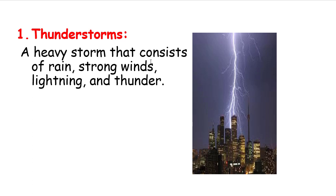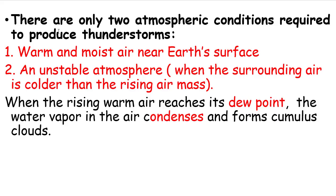There are only two atmospheric conditions required to produce thunderstorms. The first one is warm and moist air near Earth's surface. The second one is an unstable atmosphere, when the surrounding air is colder than the rising air masses.